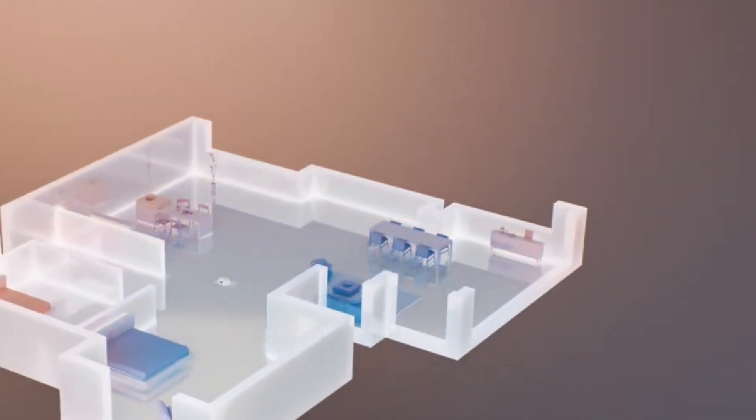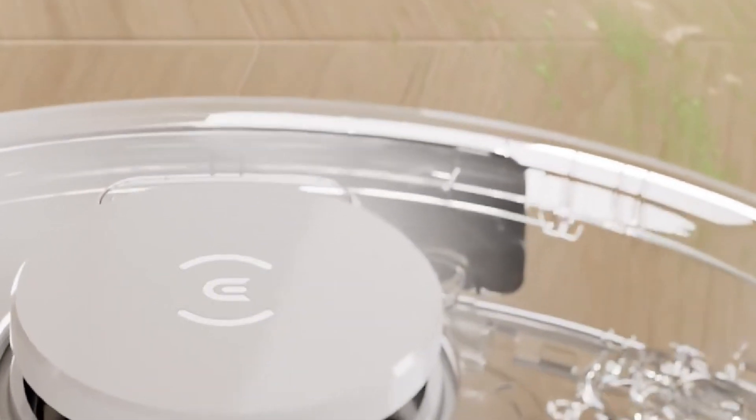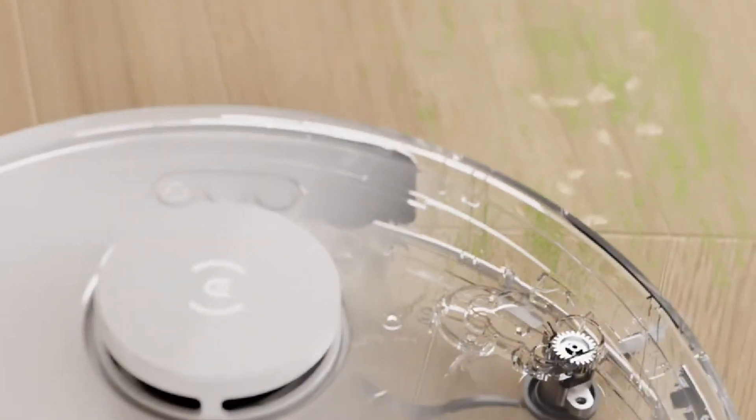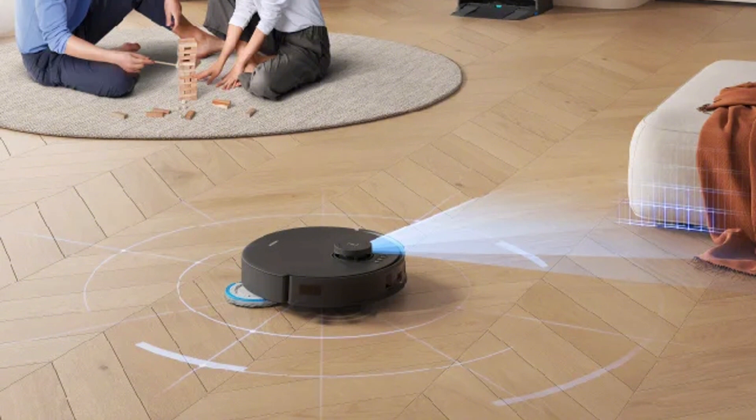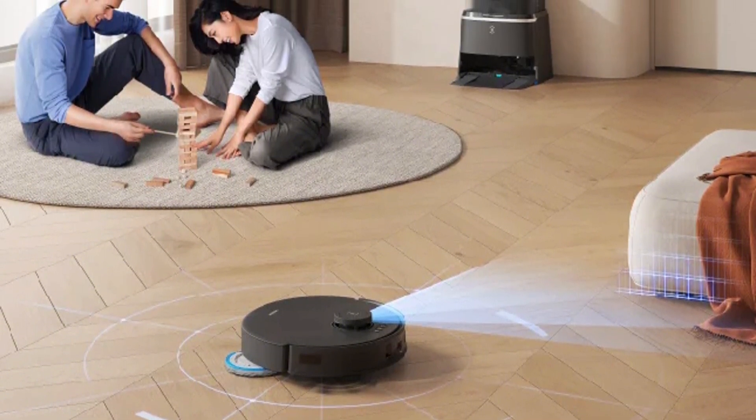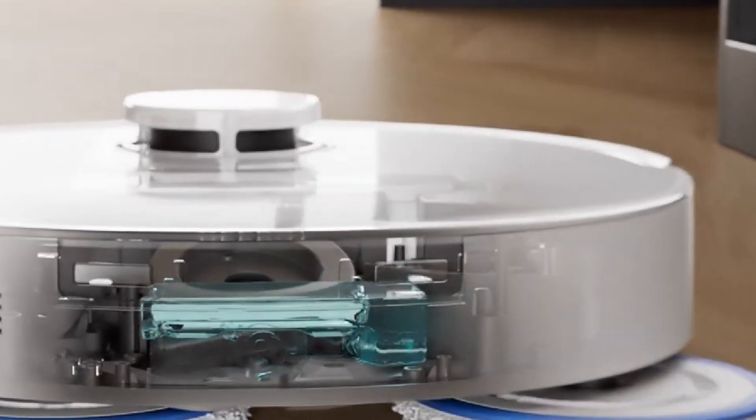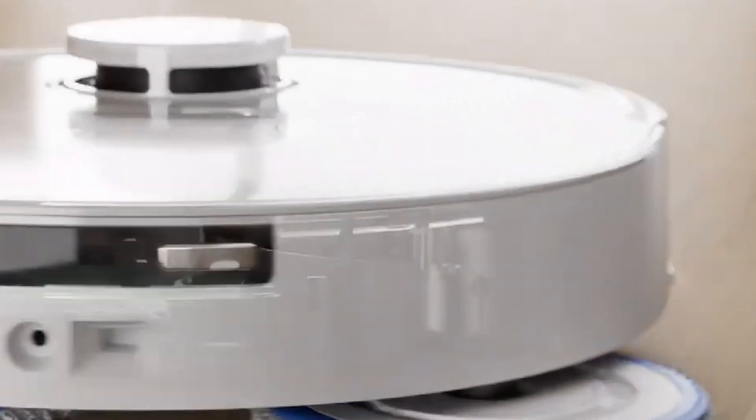The Ecovacs D-Bot T30 is packed with an array of features designed to elevate your cleaning experience and make it as hassle-free as possible. At the heart of its performance is the advanced navigation technology that sets it apart from many competitors. Using sophisticated mapping algorithms, the D-Bot T30 intelligently scans and maps your home, allowing it to clean in efficient patterns rather than aimlessly bouncing around. This smart navigation helps ensure that every corner of your living space receives attention, minimizing missed spots and maximizing coverage.